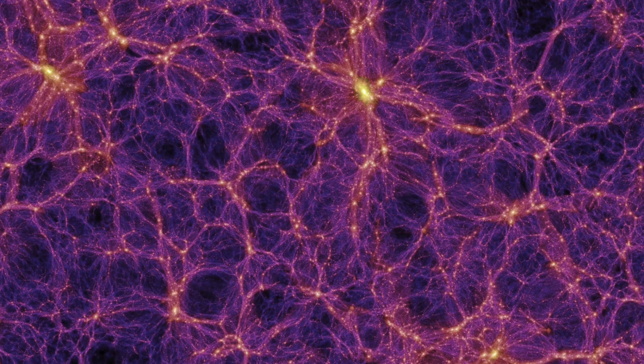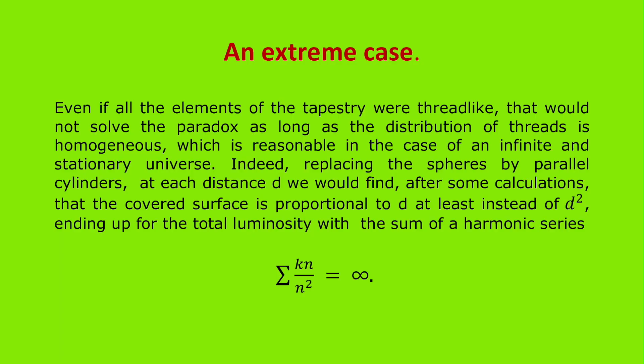Can this provide an alternative explanation? Let's be honest: even if all the elements of the tapestry were thread-like, that would not solve the paradox as long as the distribution of threads is homogeneous, which is reasonable in the case of an infinite and stationary universe. Indeed, choosing the simplest case of parallel thread-like structures and replacing the spheres by parallel cylinders, at each distance d we would find, after some calculations, that the covered surface is proportional to d, at least instead of d², ending up for the total luminosity with the sum of a harmonic series, still infinite.